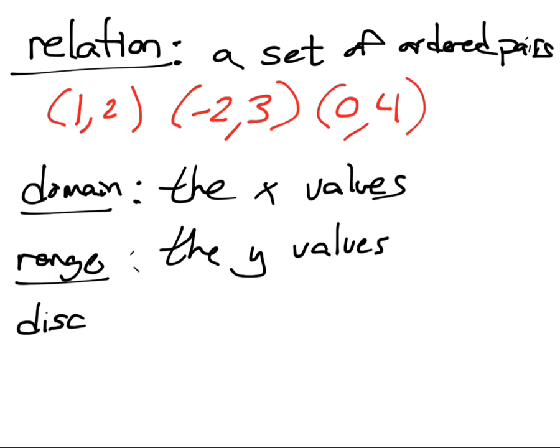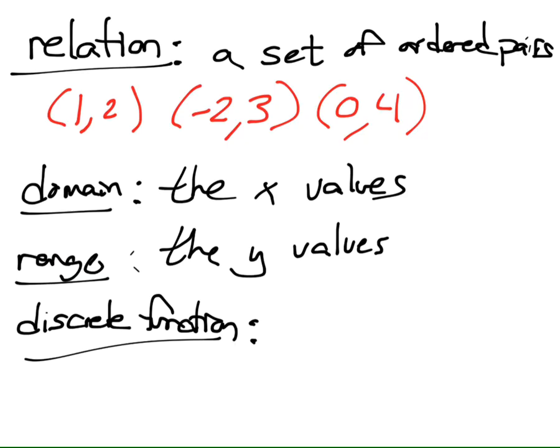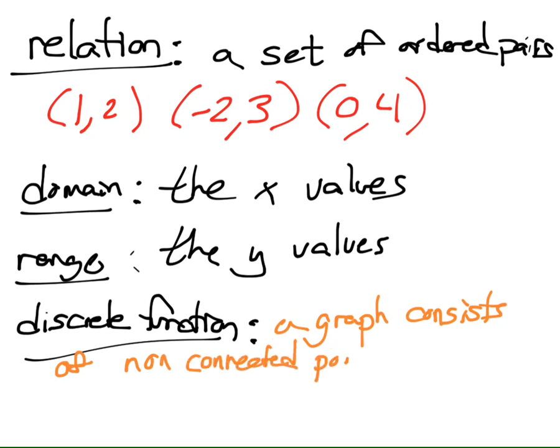The next definition is discrete function. So we talked about what a function was. A function is a relationship between an input and an output. You put something in, you get something out. So we have a specific type of function called discrete function. It is a graph whose points are not connected, a graph that consists of non-connected points. So it'd be just like a graph if you just plot a bunch of points. We would call that a discrete function. But a discrete function is a graph that just consists of all of these non-connected points.